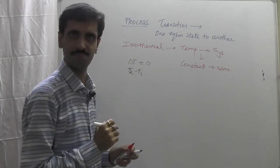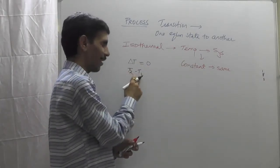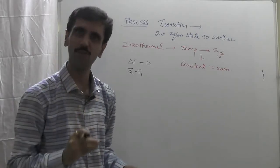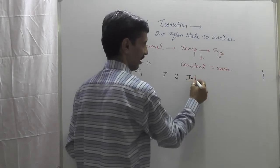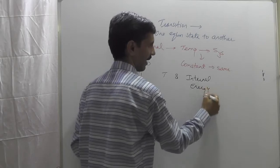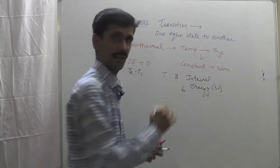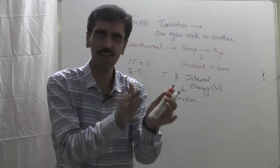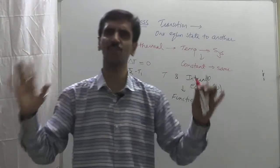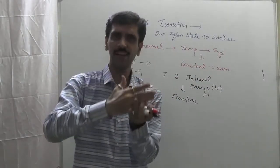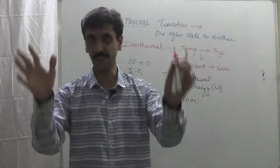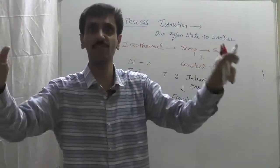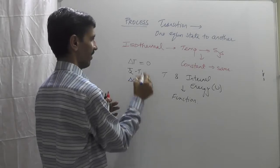In this case the temperature is constant, so the value of T2 and T1 is same, and the difference between the same number is zero, therefore delta T equals zero. Also, one more thing: temperature and internal energy (symbolized as U) are dependent on each other, they are function of each other. So if temperature is constant, the internal energy is also constant, and if there is no change, we say that delta U is equal to zero.